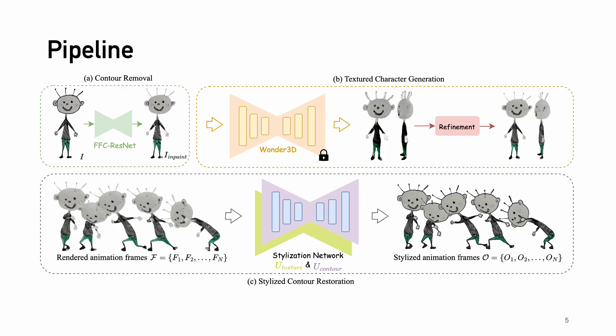This figure illustrates the Drawing Spin-Up pipeline. We first remove and in-paint the contour regions of the input drawing using an image-to-image translation network. Then we generate a coarse 3D geometry with a pre-trained Wonder3D.